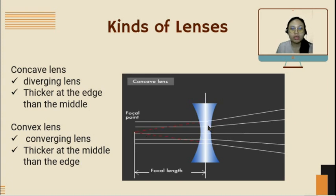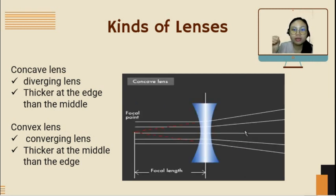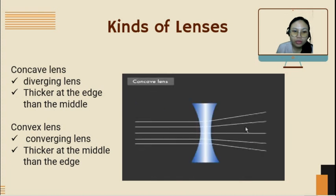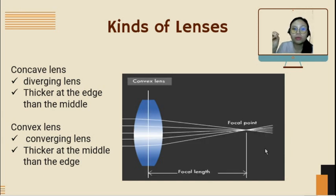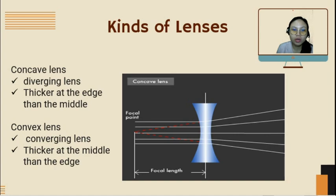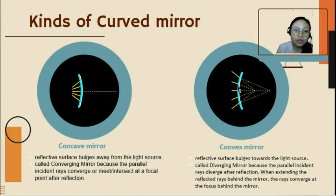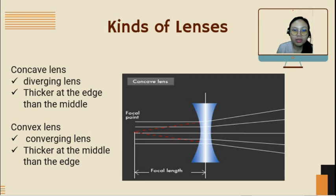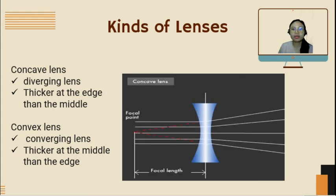Looking at the animation: for a convex lens, it is converging because the light rays intersect at a common point — that is the focal point or principal focus. For a concave lens, the rays diverge after passing through the lens. This is the opposite of mirrors: a concave mirror is a converging mirror, while a convex mirror is a diverging mirror. But for lenses, a concave lens diverges and a convex lens converges — they are reversed. Remember that.